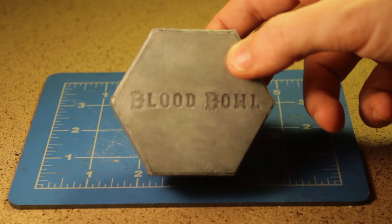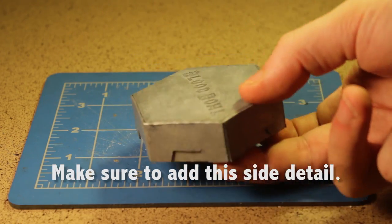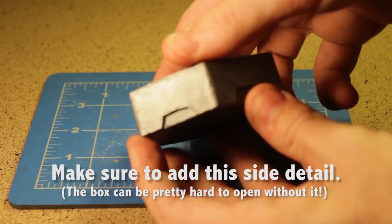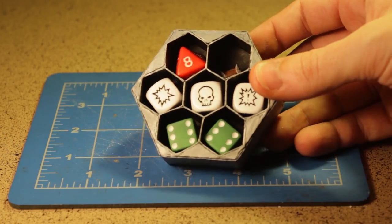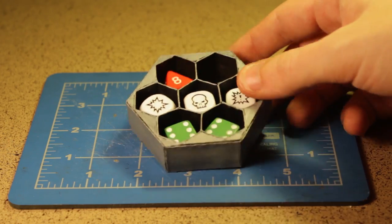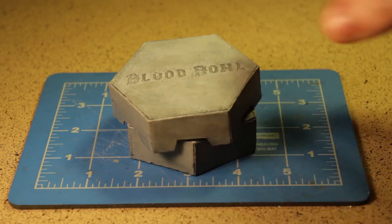This one just happens to be for Blood Bowl. You can see the detailing there on the side, and if you open it up, you can see there are seven little compartments, enough for all the dice that I need, and a little football in there too.